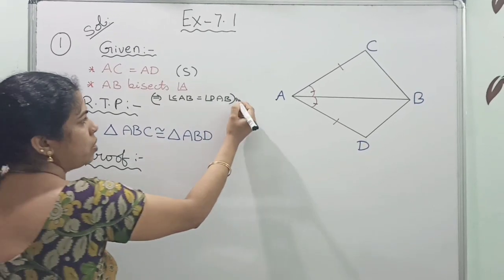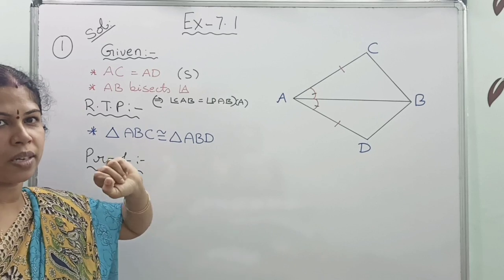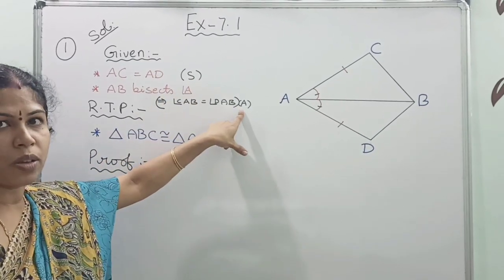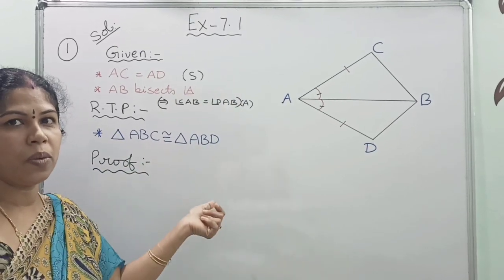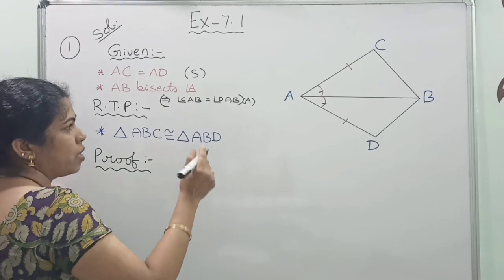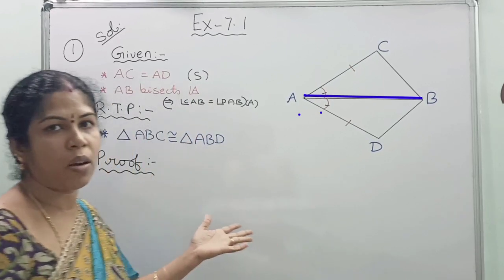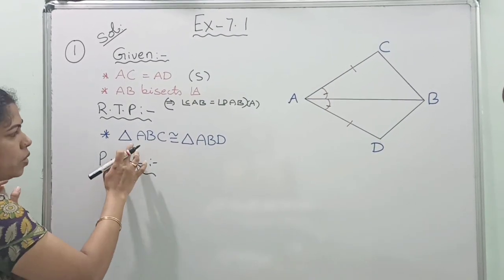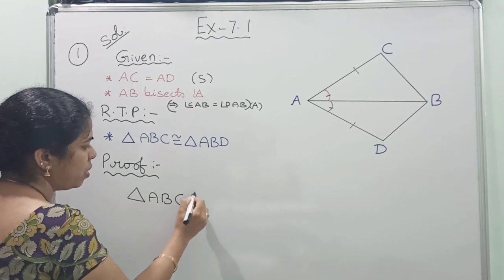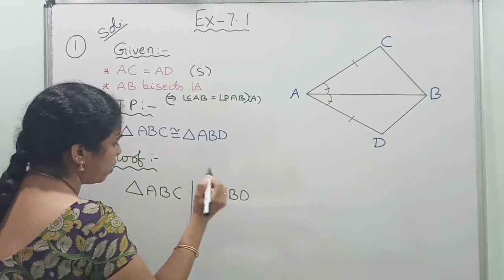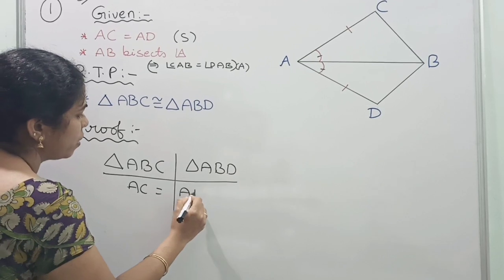Automatically these two angles will be equal, so we have one angle equal. Two parts are equal, and we need to recognize only one more part. It may be SAS or SAA congruency. If you observe the two triangles, AB is the common side to both triangles — the common side will be equal. They asked us to prove triangle ABC is congruent to triangle ABD. Related to the equal parts: first, AC equals AD, which is a side.